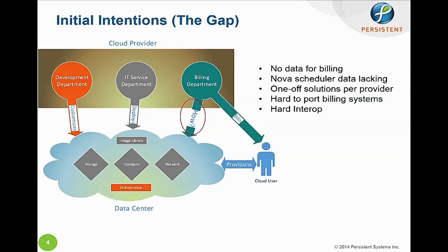So what was the initial idea? There was a gap: you had compute, network, and storage services, but different departments — development, IT, billing — all had their own one-off solutions. The billing department would crash their heads wondering how to bill for services. Nova had some metering but it was just for placement, not enough for billing. It was hard to port, hard to interpret — there was no standard. That was the bottom line: there was a clear need.